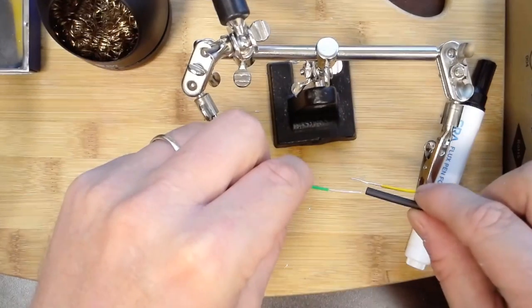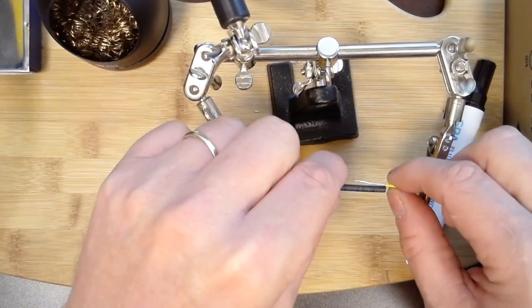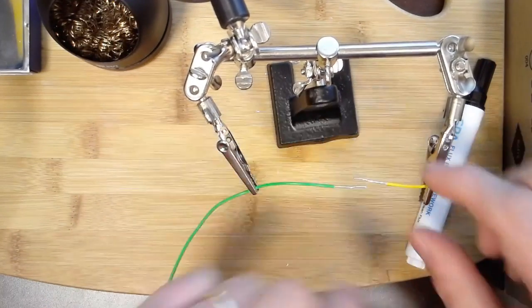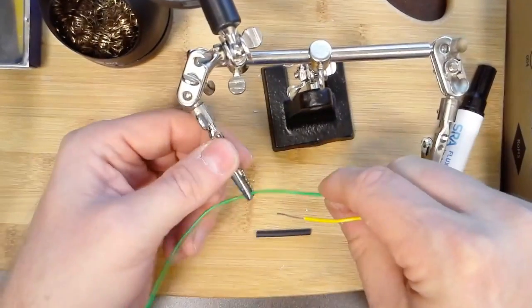This will go over the wire, and once we make the connection, we'll roll it back over and heat it up. It'll shrink over that and make a nice insulated connection.